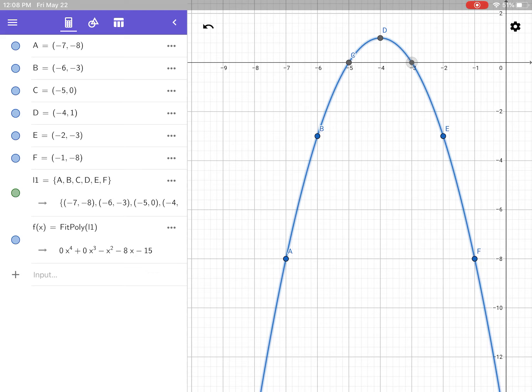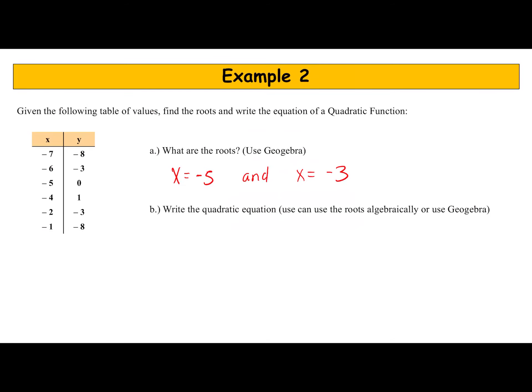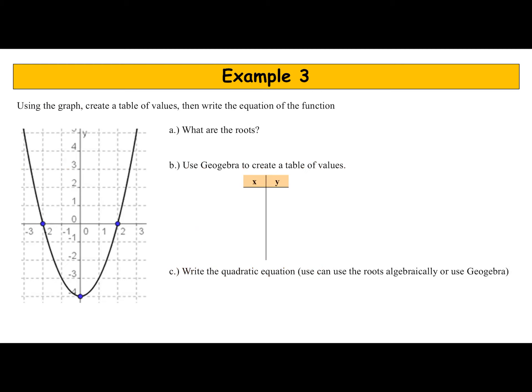Part b, write the quadratic equation. It's here right under the fit poly. I have 0x to the 4th. Remember I'm not going to use anything with a 0, so I'm going to start with negative x squared. I have negative x squared minus 8x minus 15. So f(x) equals negative x squared minus 8x minus 15. That's your formula. GeoGebra did it all for you.